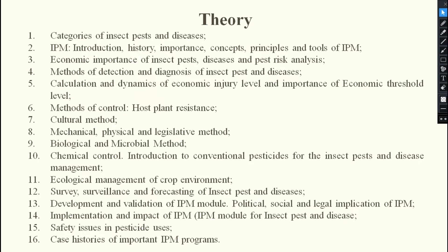The first outline covers categories of insect pests and diseases — what is a pest, what is an insect pest, what are diseases, and their categories such as major, minor, epidemic, endemic, sporadic, perennial, and key pests. The second outline is an introduction to IPM: history of IPM, importance, concept, principles, tools, advantages, and disadvantages.